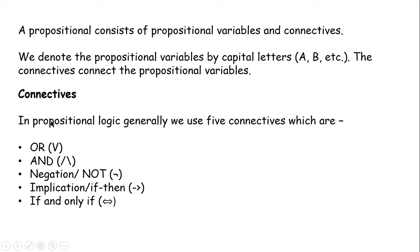Now let us see what connectives are. Connectives connect the propositional variables. We have five different types of connectives: the OR connective, the AND connective, the negation or NOT connective, the implication or if-then connective, and finally the if-and-only-if connective. Each has its own symbol.